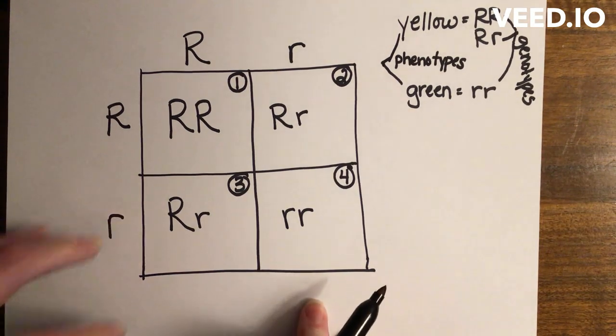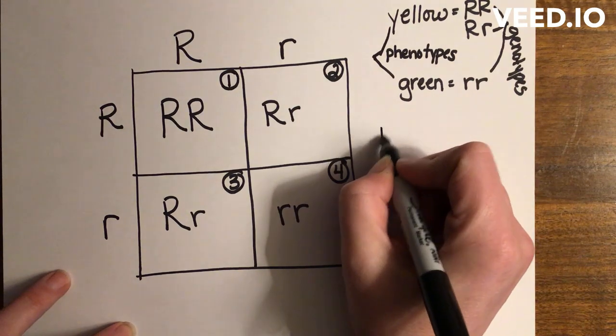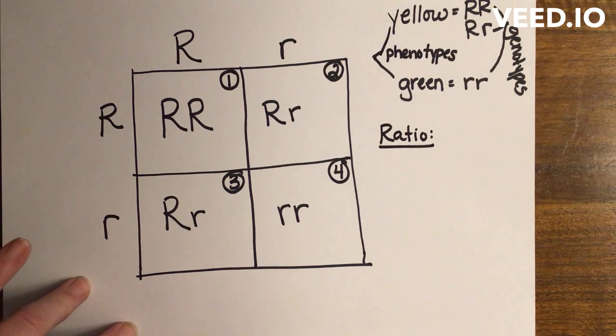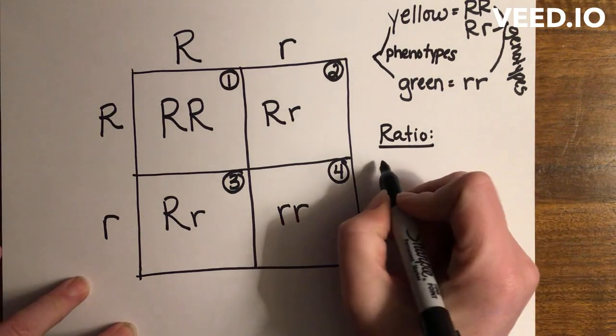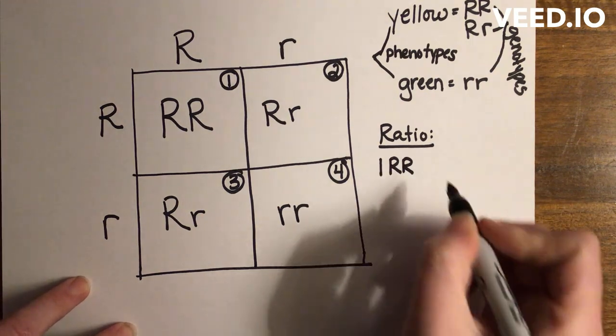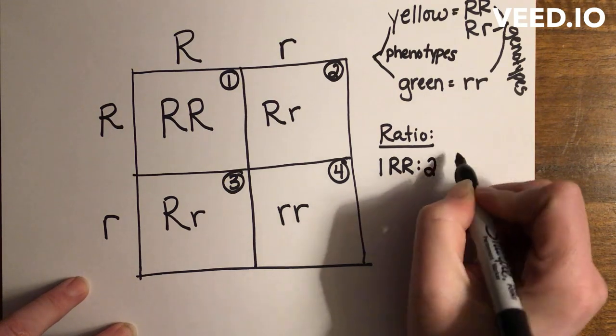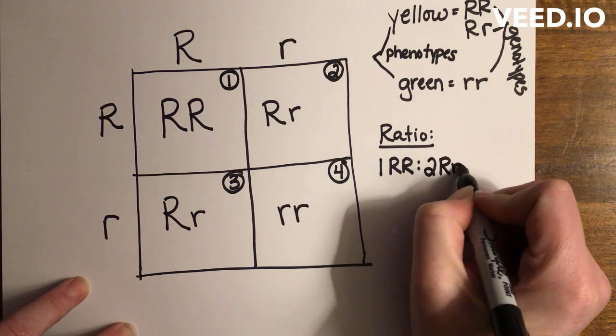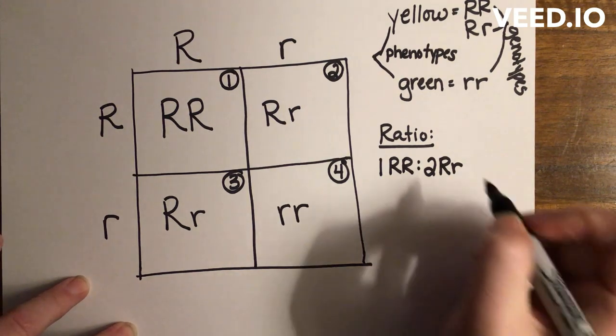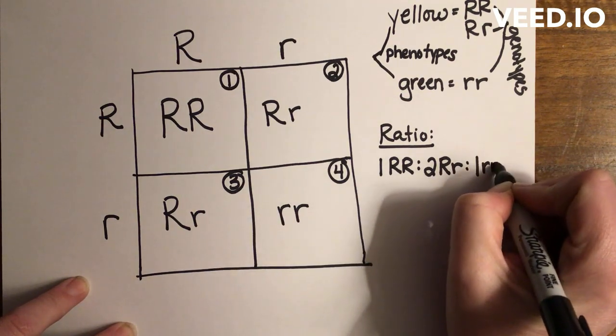So let's write out our genotypes and phenotypes. If you're asked for a ratio, I'll start with genotypes. I would write one homozygous dominant—you can write it like this or you can write the words homozygous dominant. Then I draw two dots, then I do two heterozygous. Again, you can write it like this or you can write out the word heterozygous. And then I have one homozygous recessive.